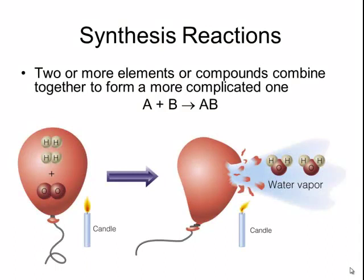If you had hydrogen molecules and oxygen molecules contained in a balloon, you would have a mixture of those two gases. But when hydrogen and oxygen are ignited, they get converted into water vapor, which is H2O. So the hydrogen and the oxygen are the simple elements on the left side of the reaction, and the water vapor is the more complicated product on the right side.